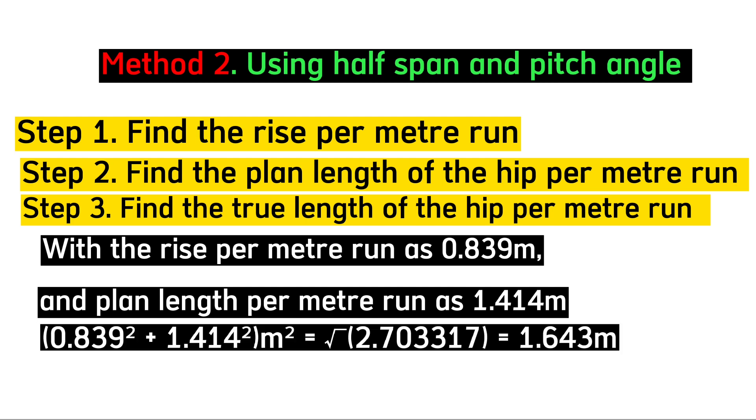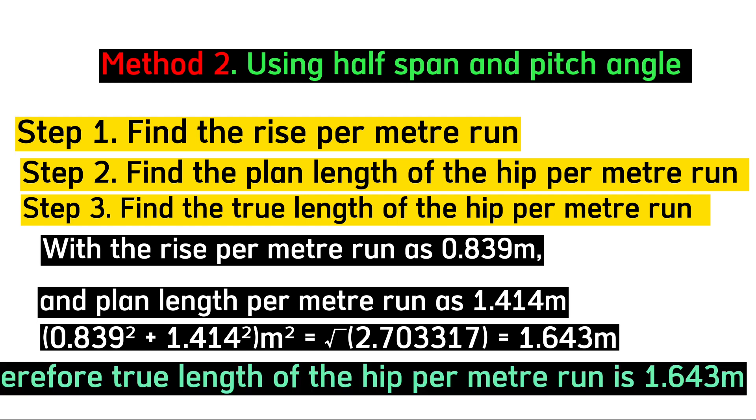This will be 1.414² + 0.839², which equals 1.643 meters. So 1.643 meters is the approximate true length of our hip per meter run.